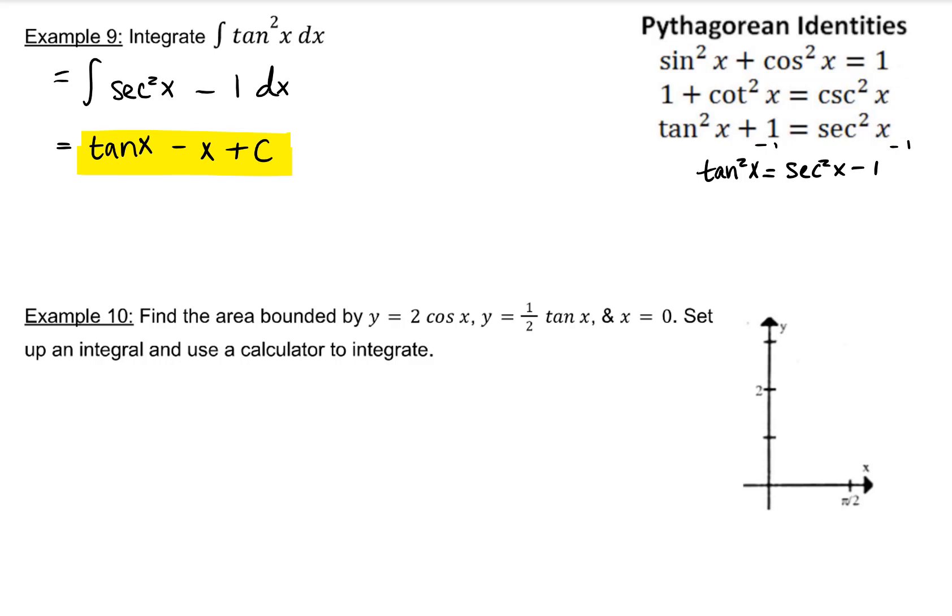Find the area bounded by y equals 2 cosine x, y equals 1 half tangent x, and x equals 0. Set up an integral and use a calculator to integrate.